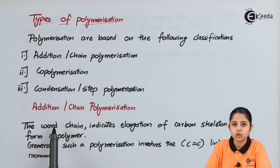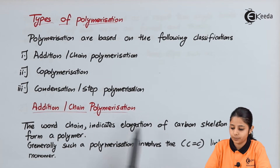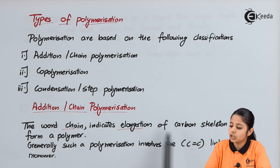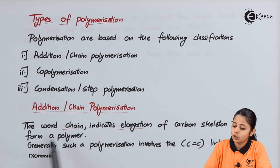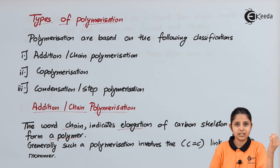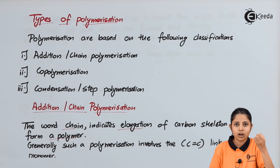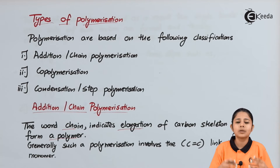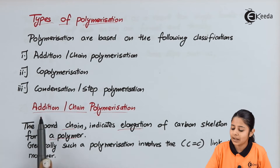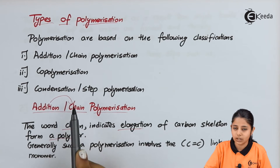Let us start with addition polymerization or chain polymerization. The word 'chain' indicates elongation of a carbon skeleton to form a polymer. That means if I have one carbon, I will attach another carbon to it, then a third, then a fourth — I am just elongating a chain by adding more and more carbons to it, and thus the name addition or chain polymerization.